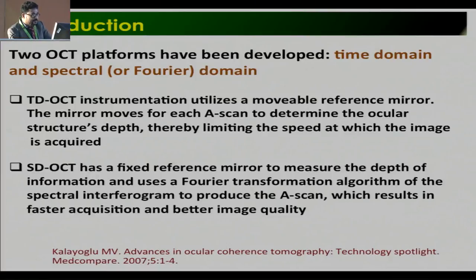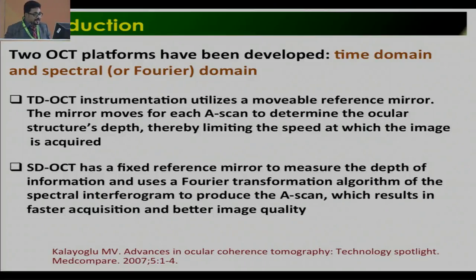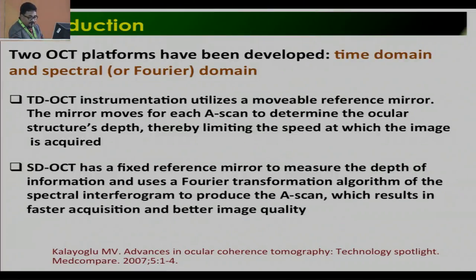There are two OCT platforms that have been developed: time domain and spectral domain, that is Fourier domain. Time domain OCT instrumentation utilizes a movable reference mirror. The mirror moves for each A-scan to determine the ocular structure's depth, thereby limiting the speed of image acquisition. Spectral domain OCT has a fixed reference mirror to measure depth information and uses a Fourier transformation algorithm, producing the scan via spectral interferogram, which results in faster acquisition and better image quality.